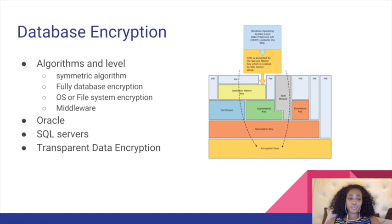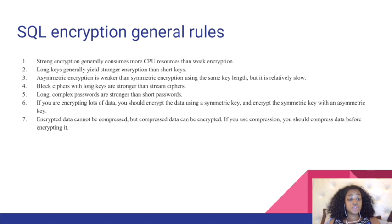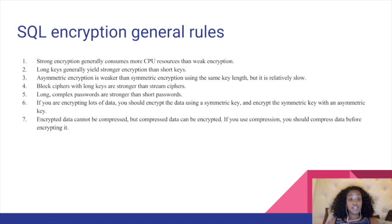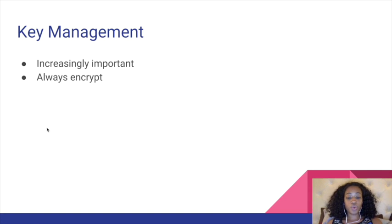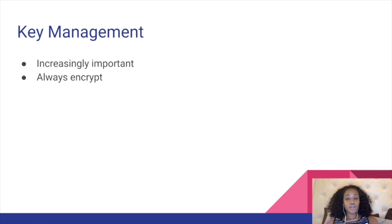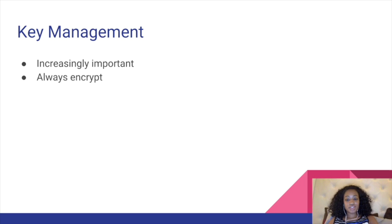Microsoft provides general rules for encrypting SQL servers — seven general rules that are really good to have, especially when you are going to encrypt an SQL server. Key management is very important, since a lot of encryptions do use keys. There's something called Always Encrypt, which is designed to protect sensitive data stored in a server database. It allows clients to encrypt sensitive data inside client applications and never reveal the encryption keys to the database engine — like the SQL server. Always Encrypt provides a separation between those who own the data and those who manage the data.